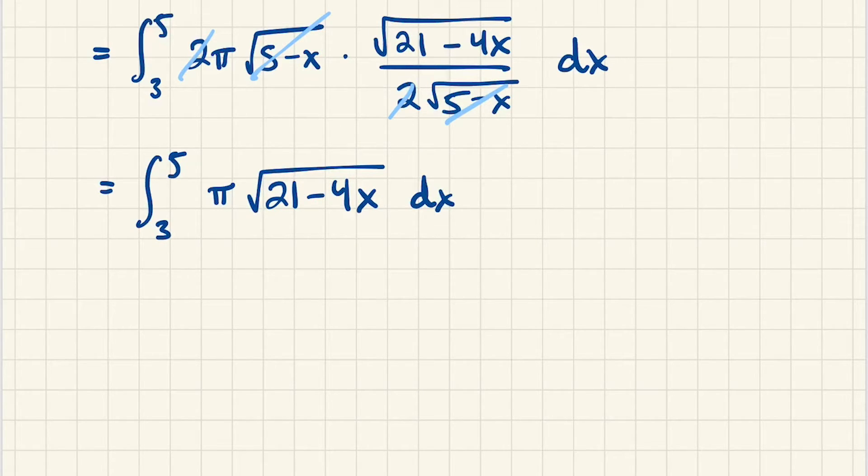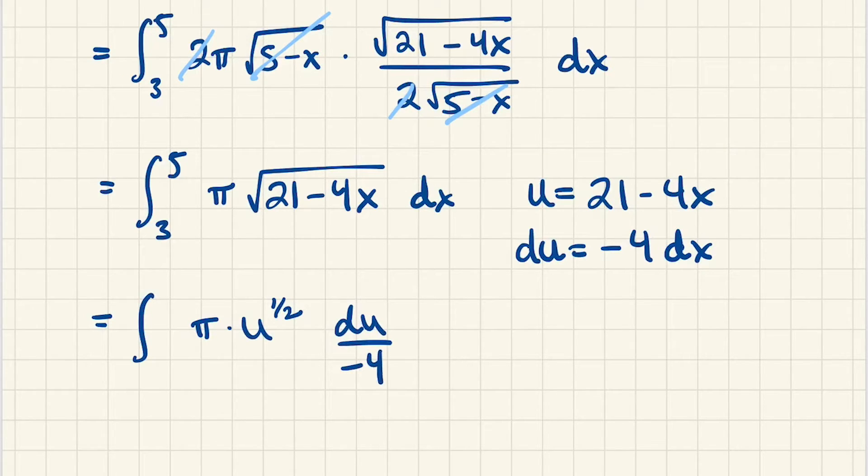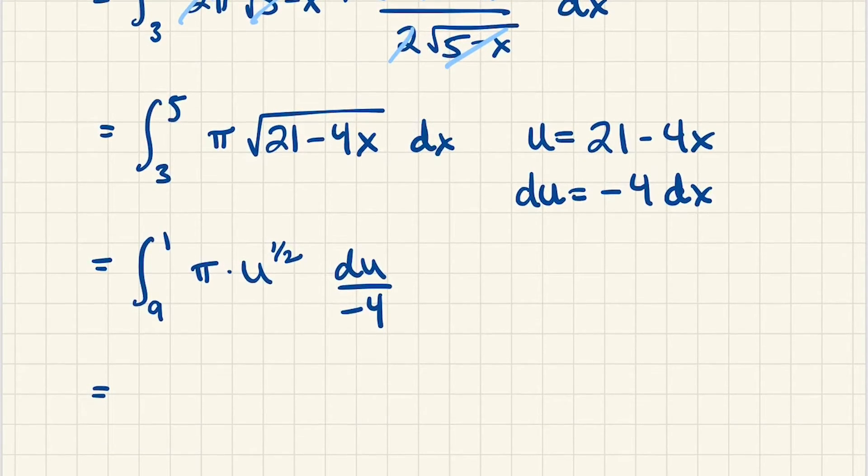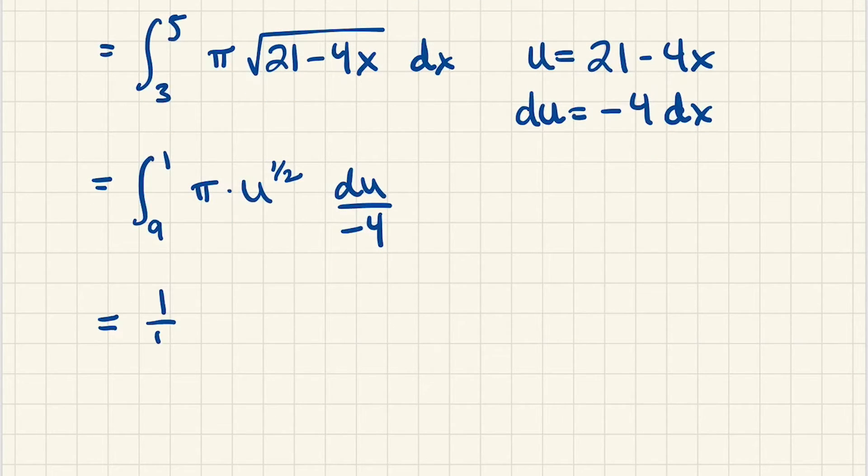All right, so why don't we do a u substitution. We'll let u be 21 minus 4x, so du is negative 4 dx. So we have pi times the square root of u, and our dx is du over negative 4, and we also have new bounds of integration because when x is equal to 3, u is 21 minus 12 which is 9, and when x is equal to 5, we have u is 21 minus 20 which is 1.